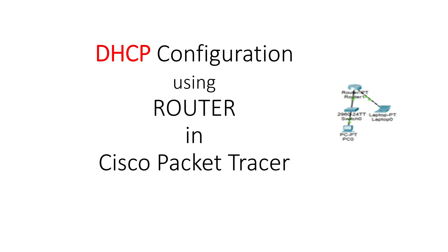Hello everyone. In this Cisco Packet Tracer video, we are going to learn how to configure DHCP. DHCP stands for Dynamic Host Configuration Protocol. We are going to see how DHCP is configured in a router. We can also make a separate server that can do all the DHCP work, which we can call a DHCP server.